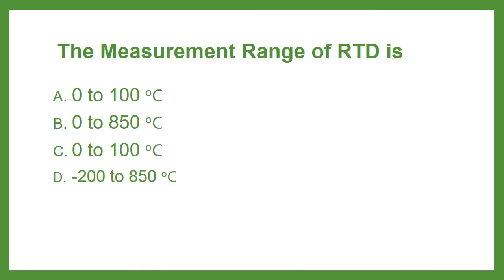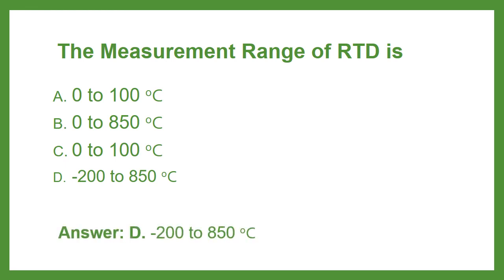The measurement range of an RTD is: Option A 0 to 100°C, Option B 0 to 850°C, Option C 100 to 850°C, or Option D minus 200 to 850°C. The answer is Option D: minus 200 to 850°C.